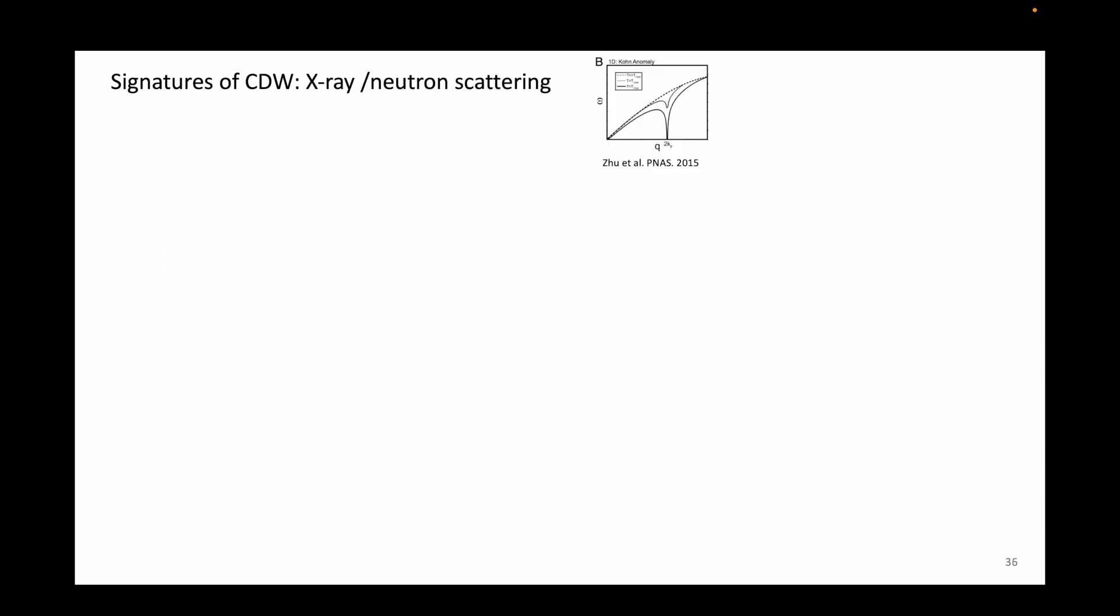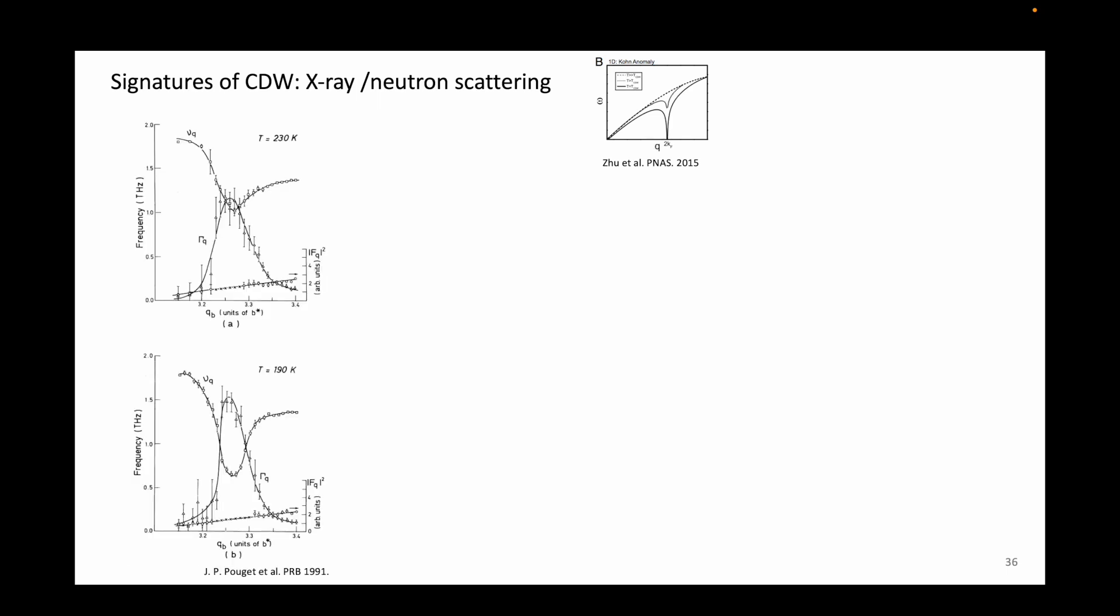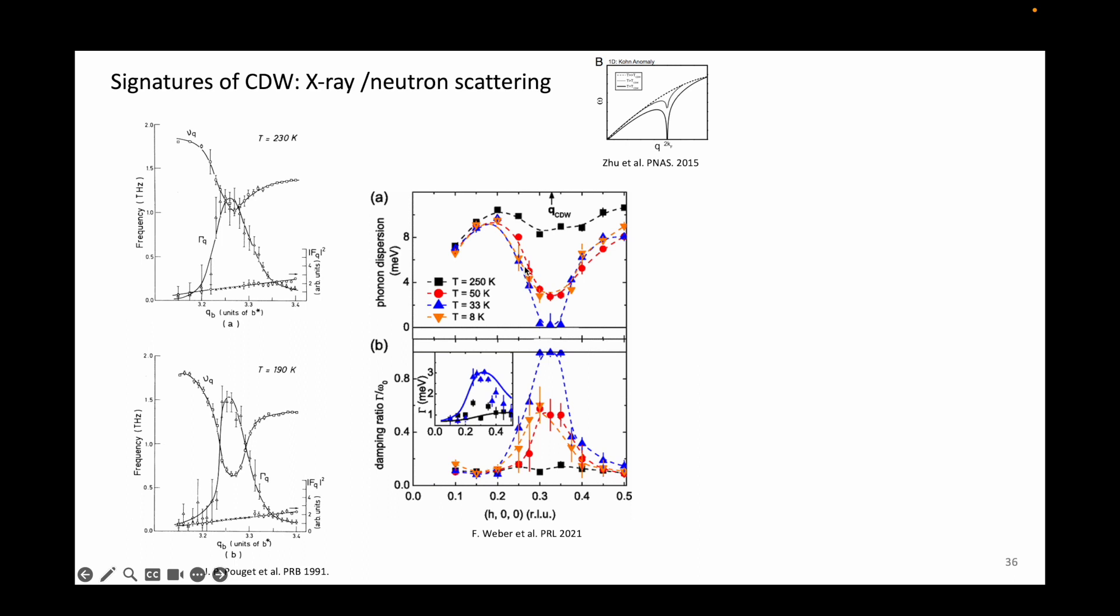The Kohn anomaly can be directly measured using X-ray or neutron scattering experiments at various temperatures. The neutron scattering experiments on the left shows the onset of the Kohn anomaly in blue molybdenum bronze, and a similar feature can be seen in the X-ray scattering experiments on niobium diselenide. In this work, we see the complete suppression of the phonons at Q_CDW.